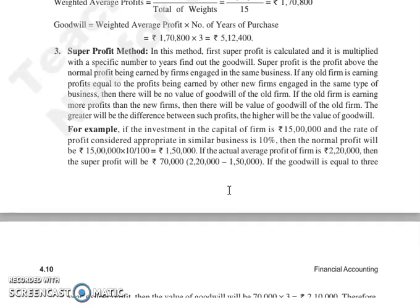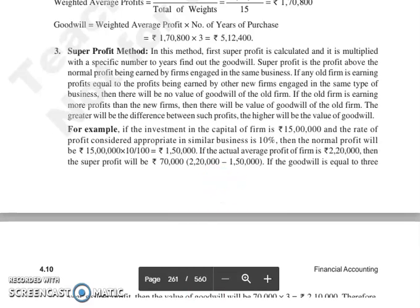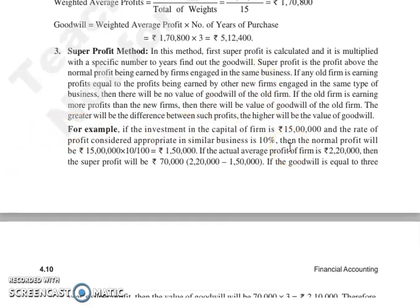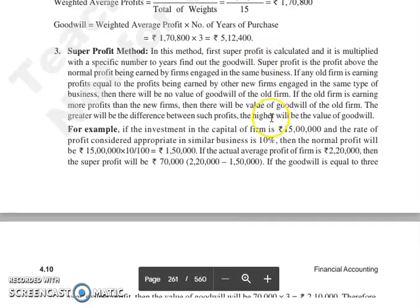The next method is the Super Profit Method. Under this method, first we calculate the super profit, and then multiply it by the specified number of years to find out the goodwill. Super profit means the profit you earn above the normal profit — the excess profit a business earns over what new firms earn in the same type of business.